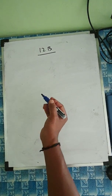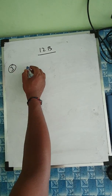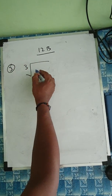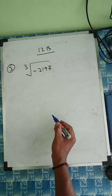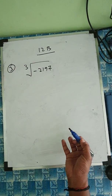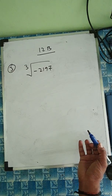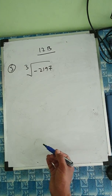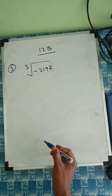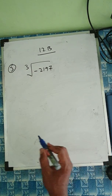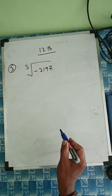Question number 3 — try the second and third parts yourself. For the first part, minus 2197 is given. We use prime factorization since the number is small. For big numbers, estimation is better, just like long division is used for square roots of big numbers.